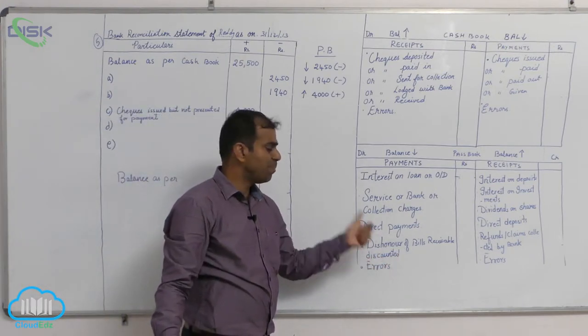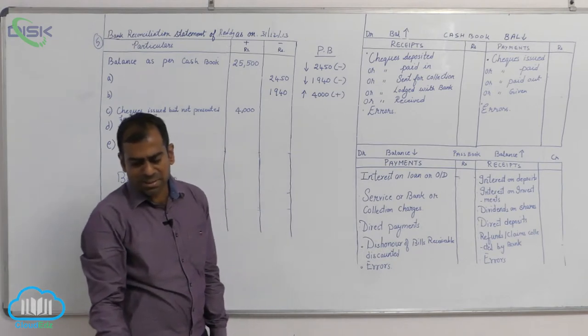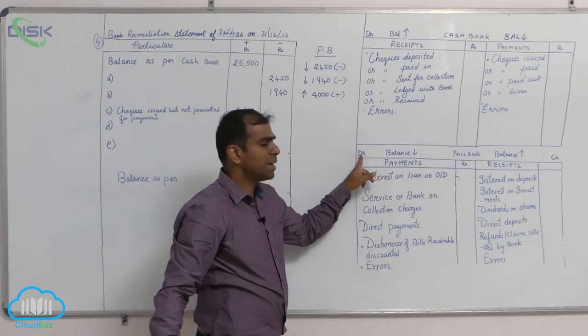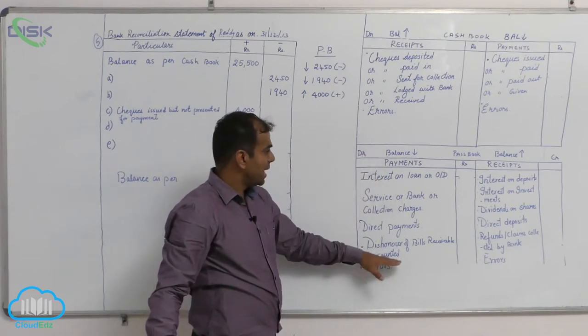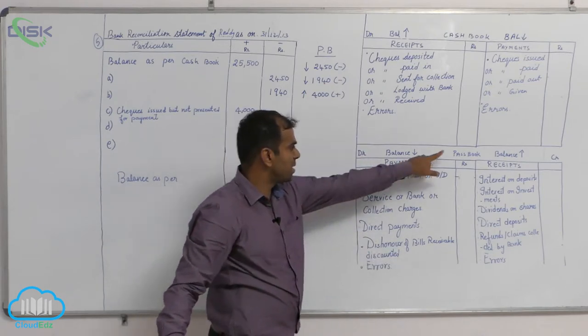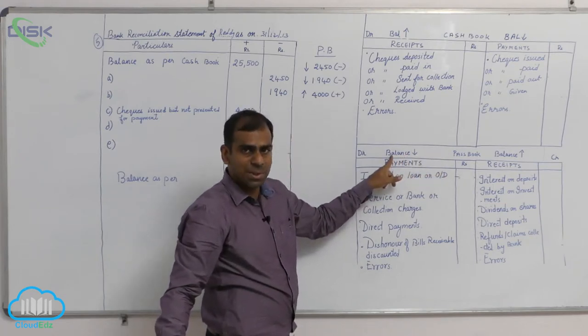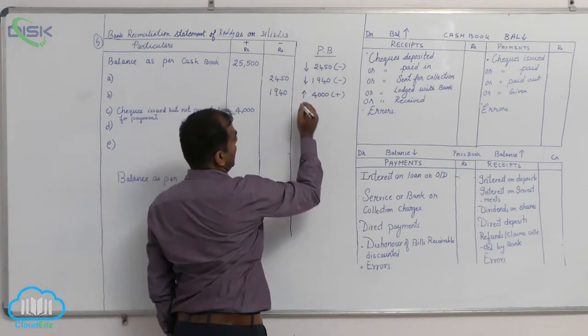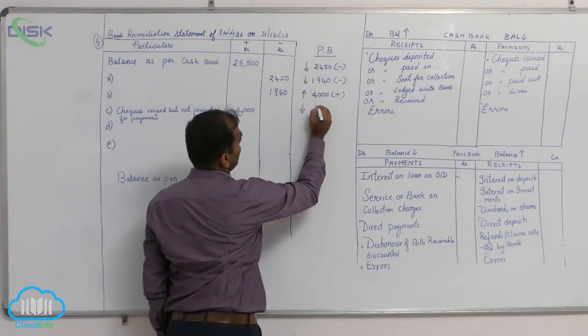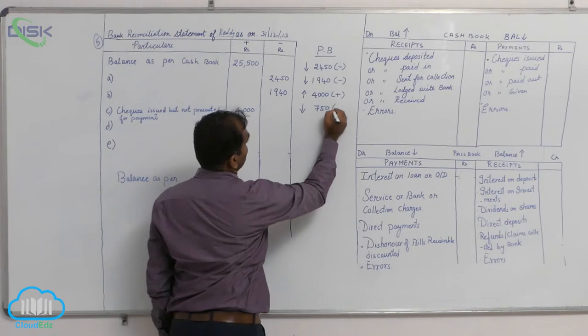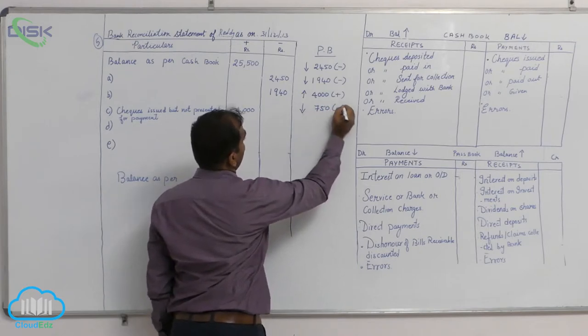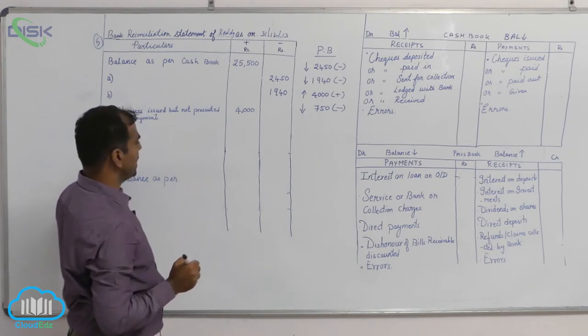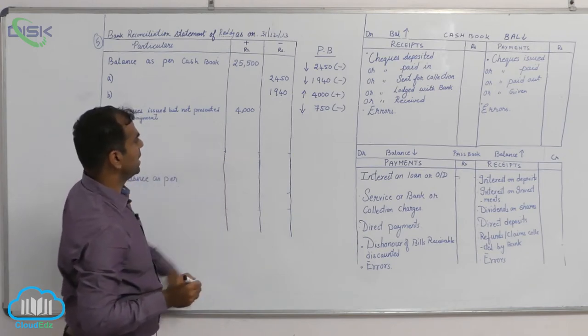Since it is a single amount we need not worry much. You have an entry on the payment side of your passbook. When an entry is there on the payment side of passbook, the passbook balance comes down. As a result, you are finding out passbook balance, so directly you can say passbook balance is coming down by 750. Because it is coming down, you will minus 750 in your solution. So transaction D, you can write the same statement and write 750 in the minus column.